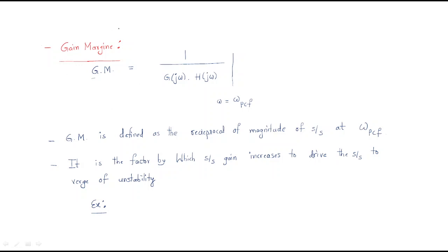Hello everyone. In this session we will discuss important topics. The first topic is the gain margin. The name itself suggests it is a margin — a margin for stability, meaning the marginal gain value at which the system loses its stability.